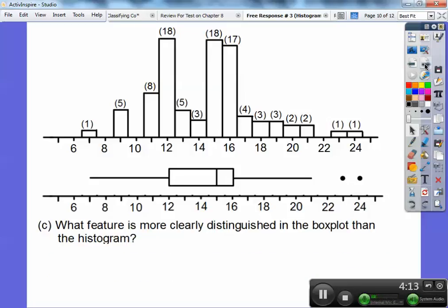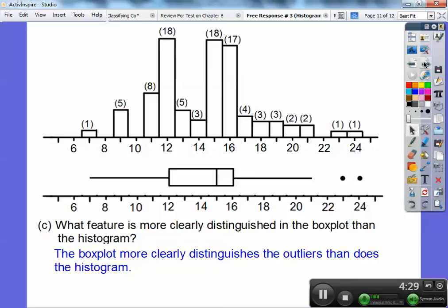And then the next one says, what feature is more clearly distinguished in the box plot than in the histogram? I know you can kind of see them right here, but I didn't know until I calculated them right here. I can totally see that these are outliers right here that's missing. I can't tell as well in the histogram right there. So the box plot more clearly distinguishes the outliers than the histogram does.